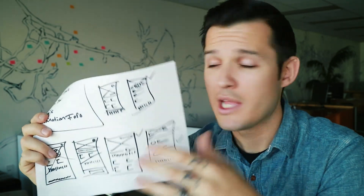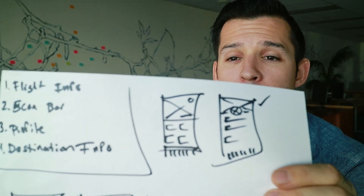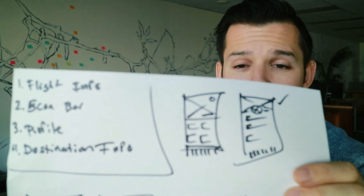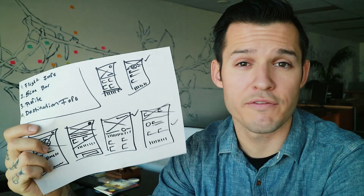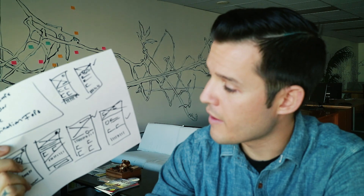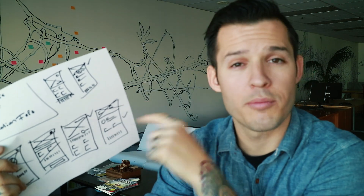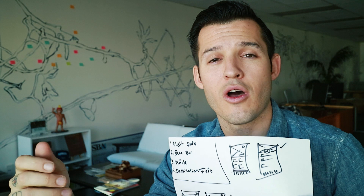Quick tip: as you are wireframing, it's important to come up with your own personal wireframing or design sketching language. For me, if I'm going to represent a photo I do a box with an X through it, and if I do a header I do open boxes. If you're interested in my technique for wireframe sketching, you can click the link up here or down in the description. It's important to come up with your own language — as long as it makes sense to you, that's all that matters. You're going to be explaining these wireframes to whoever you present them to anyway, so be confident in that.